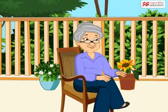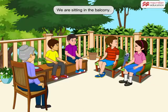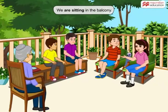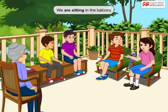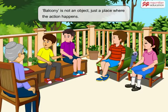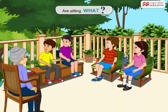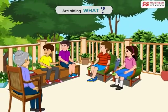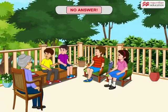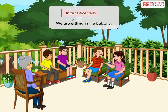Let's try another one. We are sitting in the balcony. The verb is are sitting. But what is the object? Balcony is not an object, just a place where the action happens. If we ask the question 'what' to the verb are sitting, we do not get an answer. So this is an intransitive verb, right, Grandma?